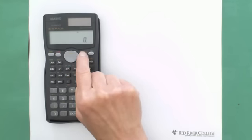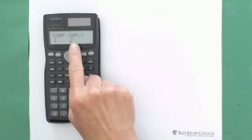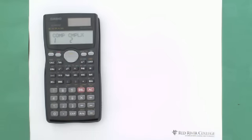Then go to mode. Second step, go to mode. CMPLX, which is complex number. So hit the 2 and go to complex number. And you can see on the top screen you have CMPLX.